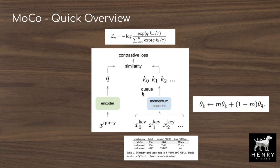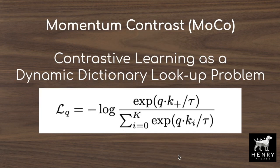The queue is a last-in-first-out data structure where the newly sampled mini-batch goes to the front and the oldest keys are popped out and no longer used. The key way to think about momentum contrast is as a dynamic dictionary lookup problem, where the dictionary of positive and negative keys changes over time as you train the query and key encoders.